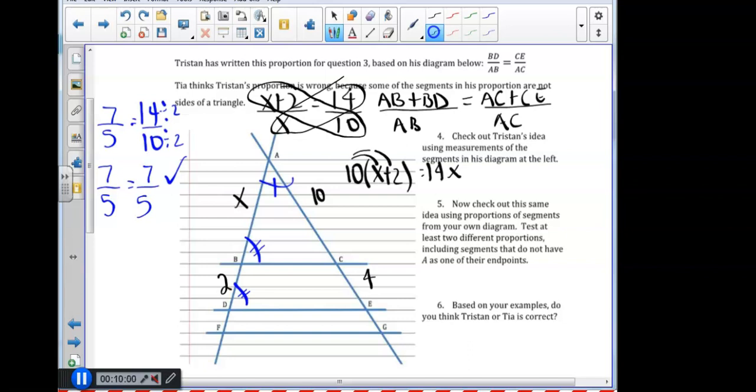And we would keep going to solve for X. So we could distribute the 10. 10X plus 20 equals 14X. Combine our X's. So minus 10X. So 20 equals 14 minus 10 is 4X. Divide by 4 and 20 divided by 4 is 5. So knowing that these are similar is super important because we will be asked to find missing side lengths.